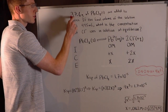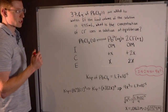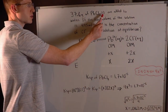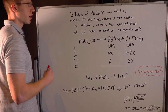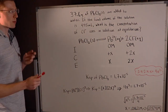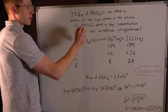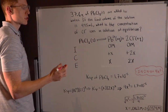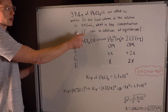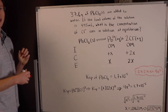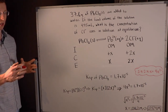In this first problem, 37.6 grams of lead chloride PbCl₂ solid are added to water. If the final volume of the solution is 445 milliliters, what's the concentration of chloride or Cl⁻ ions in the solution at equilibrium?